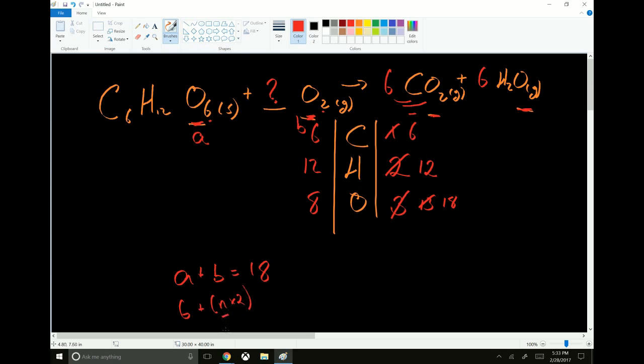Now we just need to solve for that number. That number is the coefficient that's going to go in the blank slot in front of oxygen. So 6 plus 2n equals 18. Subtract 6 from both sides, you get 2n equals 12. Divide both sides by 2, n equals 6. So we just erase this. Now 6 times 2 is 12 plus 6 is 18.